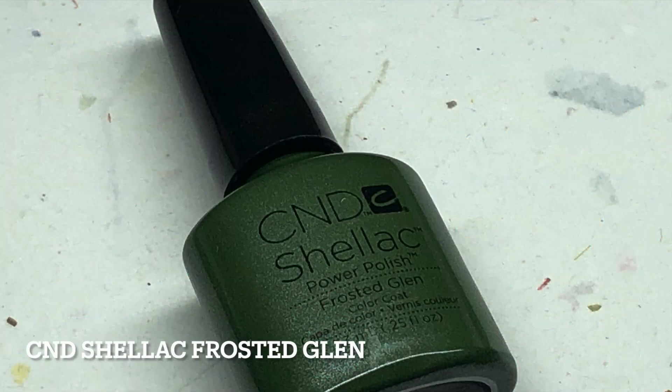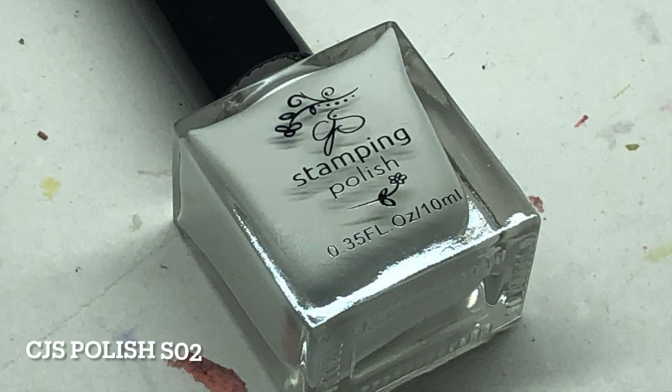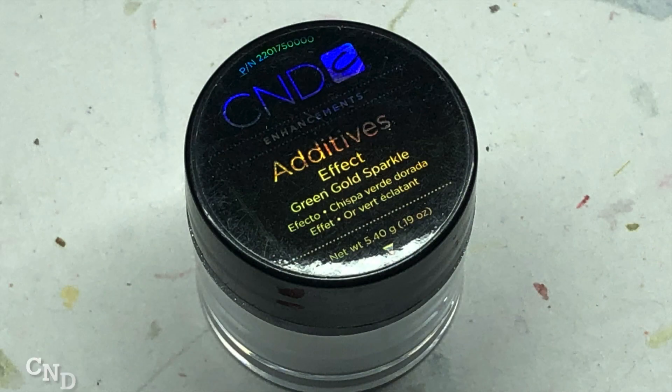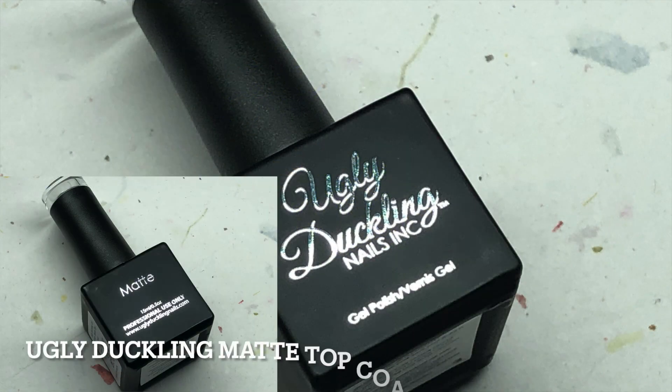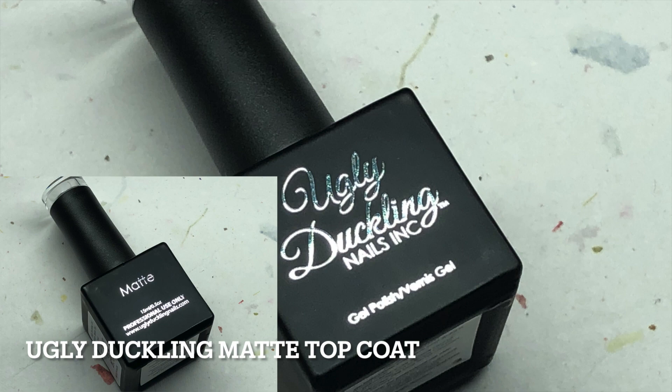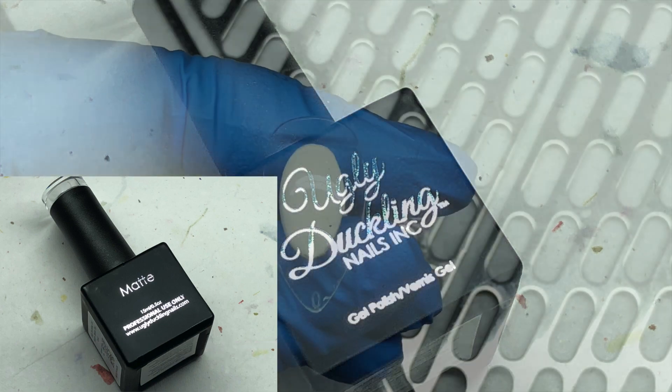For my base color, I am using CND Shellac Frosted Glen. For my stamping polish, CJS S02, which is the sticky version of white. I'm going to be using some CND Additive Green Gold Sparkle just to give it a little bit of bling, and then seal up the design with the Ugly Duckling matte top coat.